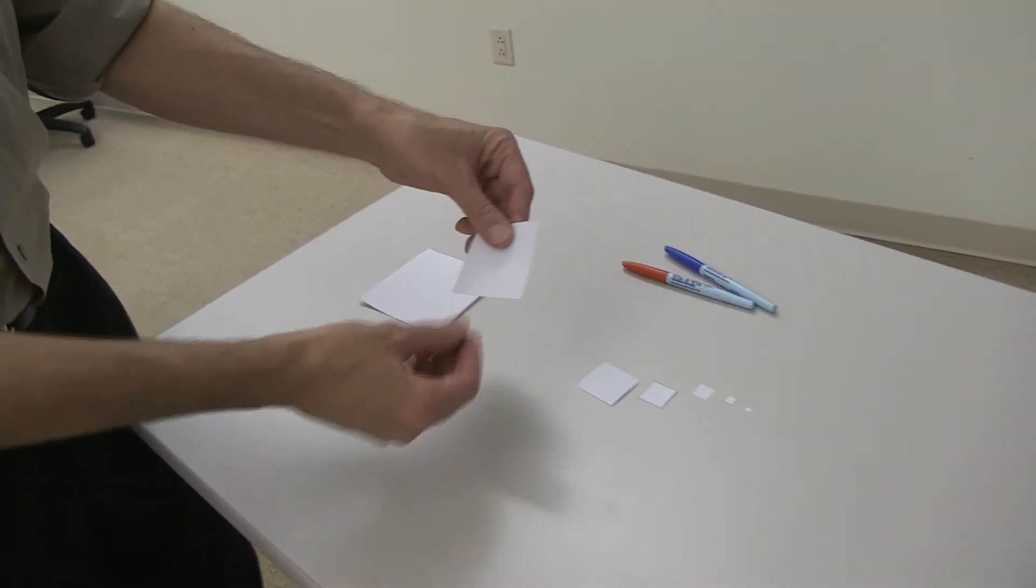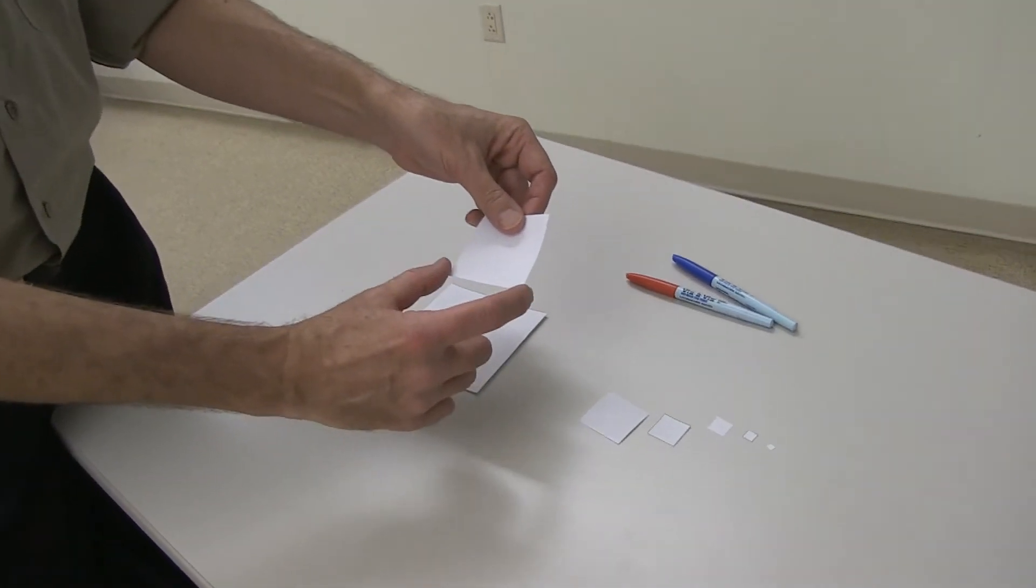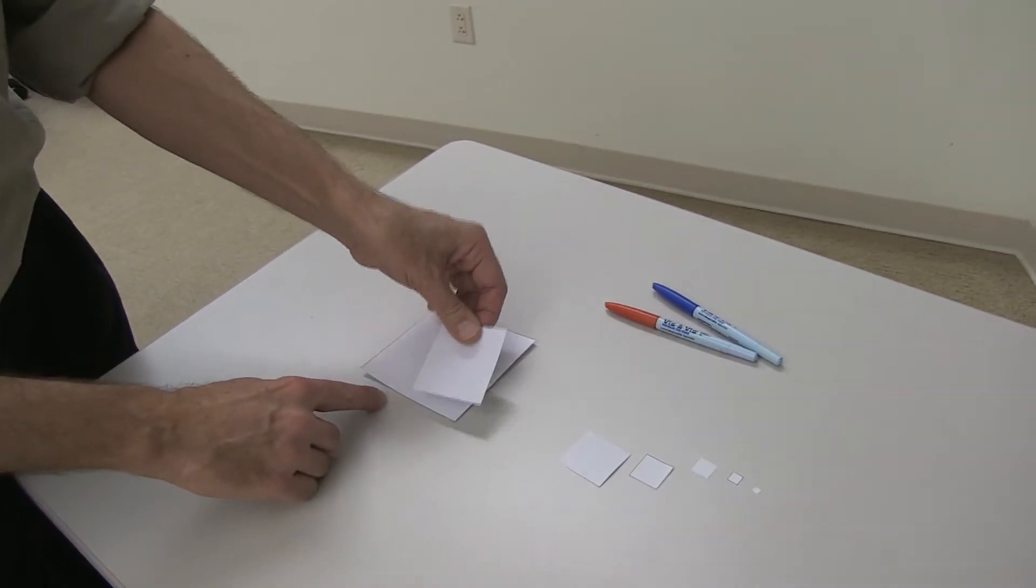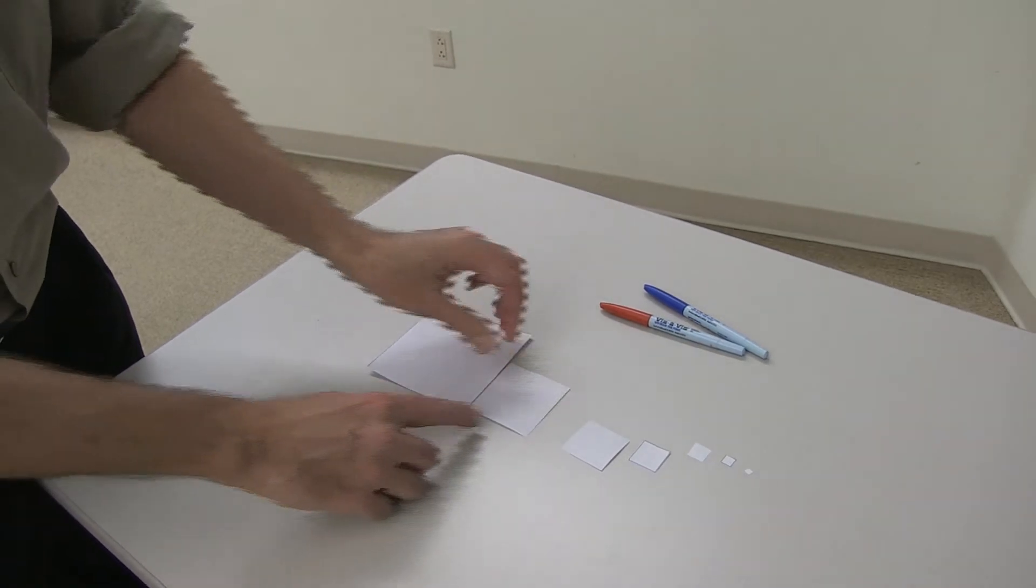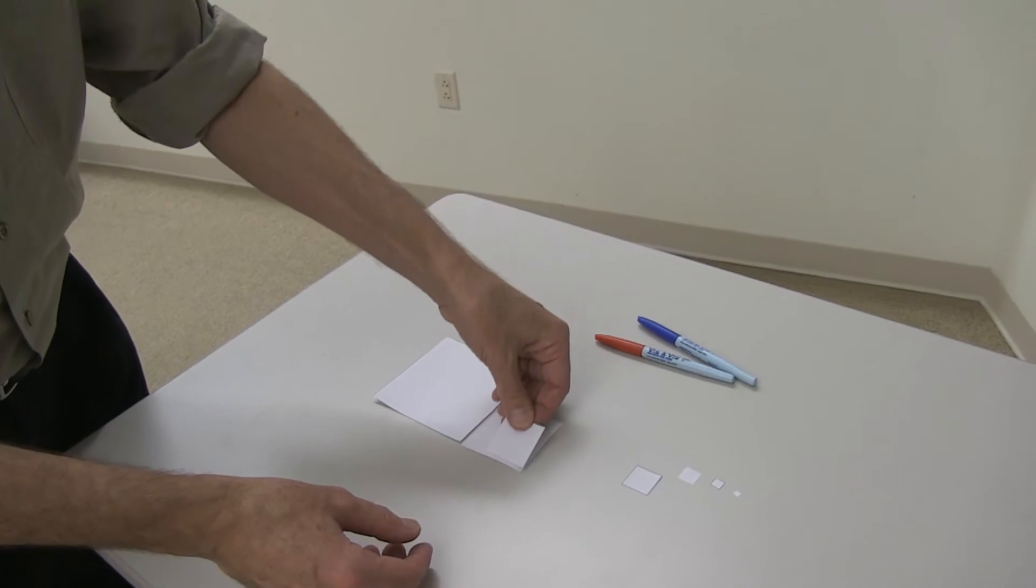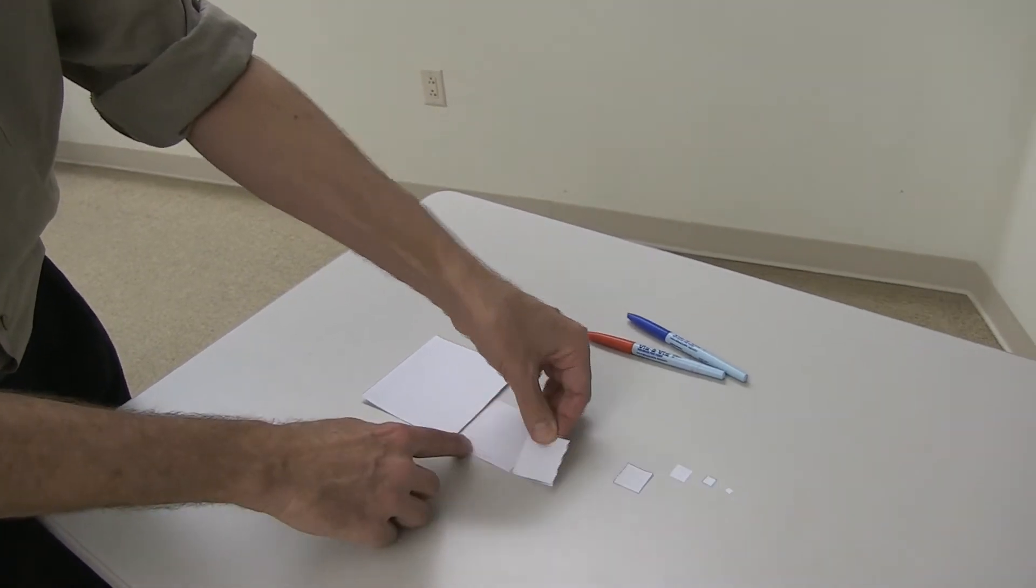And then this next one represents the next number in our list, 60% of 2. You can see that this side is a little more than half. In fact, it's precisely 60% of the previous. And then this square, the third square, is 60% edge length of the previous.